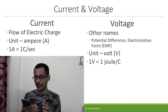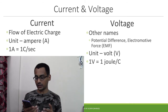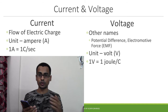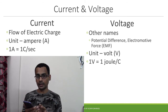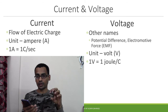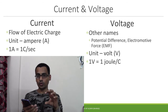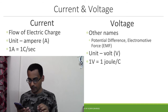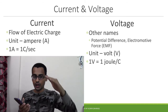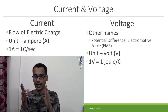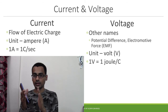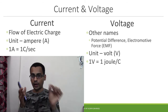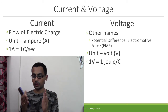The unit of voltage is the volt, represented by capital V. One volt is equal to one joule per coulomb — meaning when you spend one joule of energy to move one coulomb of charge between two points, those two points are said to be separated by one volt of potential difference.